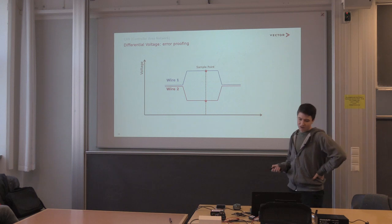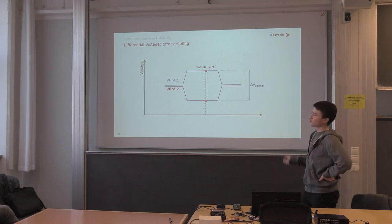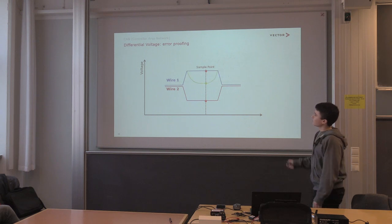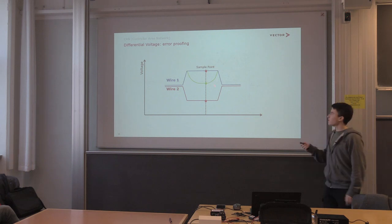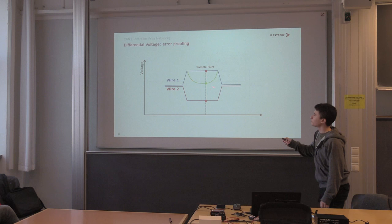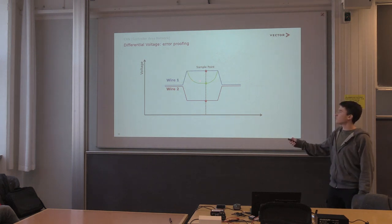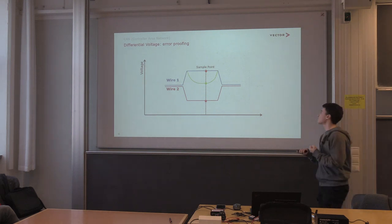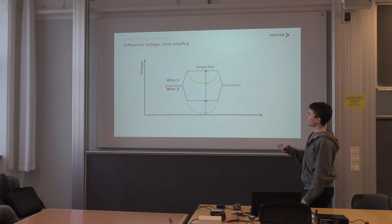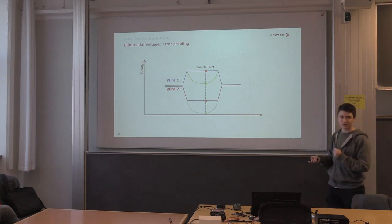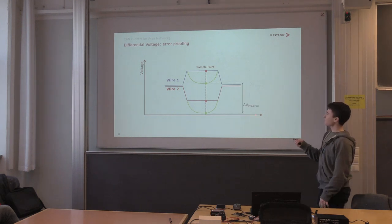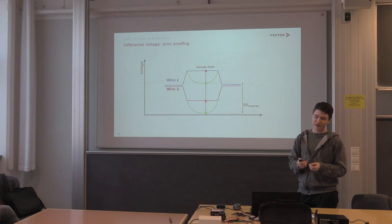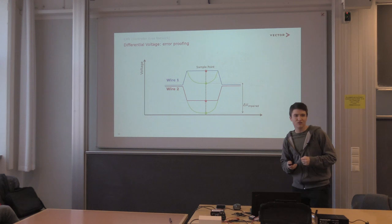Why differential voltage? When sampling on CAN, an electromagnetic disturbance at a sample point could make a single-wire measurement look like the wrong voltage level. But because the two wires are twisted tightly together, the disturbance affects both wires by roughly the same amount. Since we're measuring the differential voltage, we're largely unimpacted by that disturbance. CAN thus uses a twisted wire pair to gain immunity to electromagnetic disturbances.